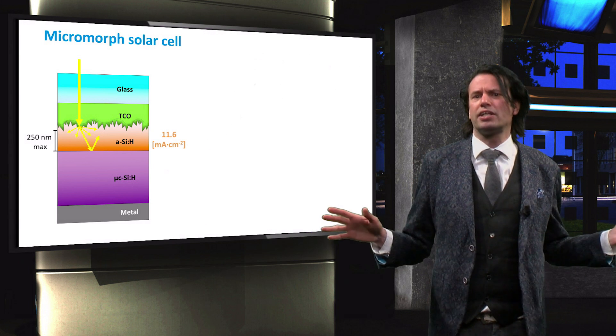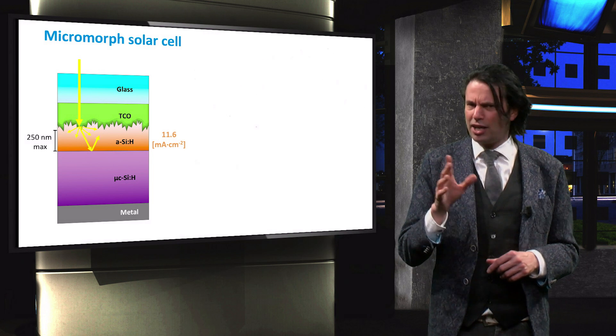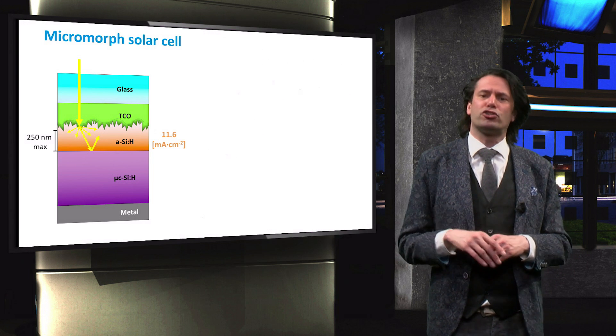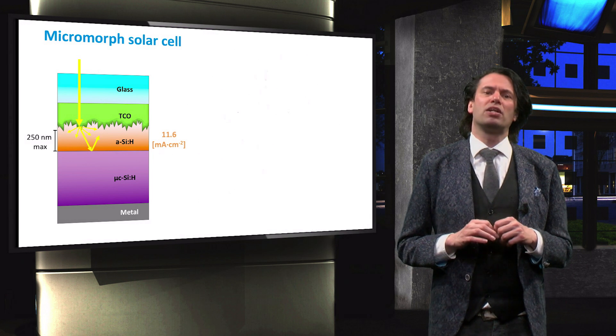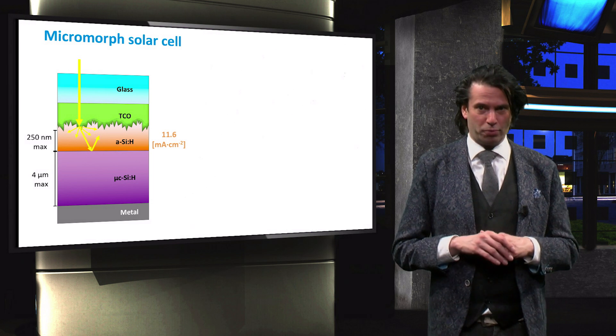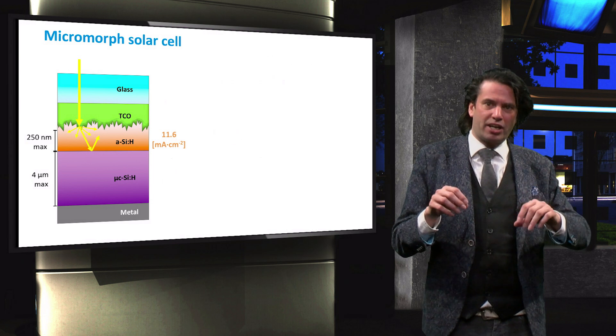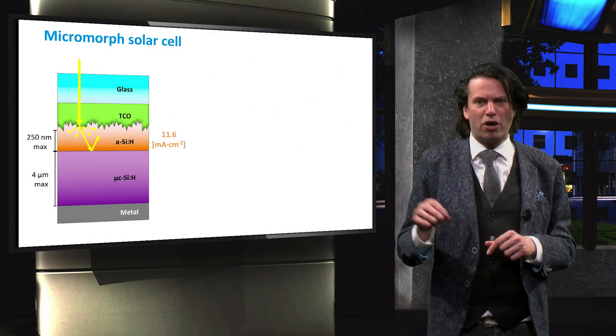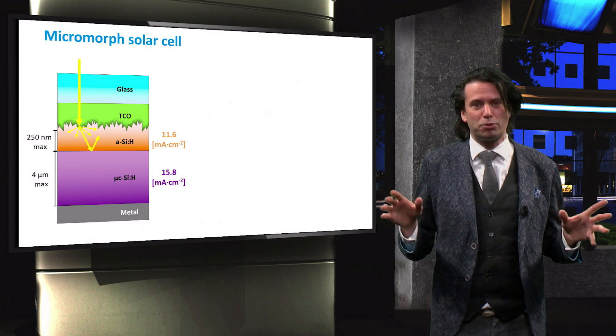Microcrystalline silicon has a significantly lower density of metastable defects than amorphous silicon and does therefore not suffer from light-induced degradation. The microcrystalline absorber layer thickness is in practice limited to around 4 micrometers. In this particular micromorph device, the microcrystalline bottom layer produces about 15.8 mA per square centimeter.